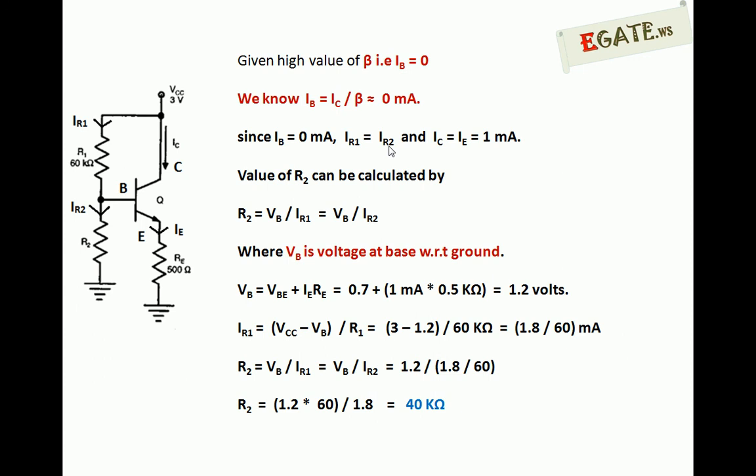So high value of beta gave us two conclusions: one is same current flows in R1 and R2, same current flows through collector and emitter. Now we need to calculate R2 value.